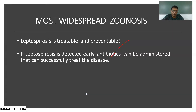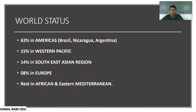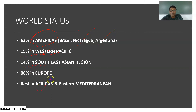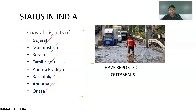Leptospirosis is a treatable disease. Whenever a case is identified and treated with the correct antibiotic, the disease can be cured. Regarding world status, 63% of cases are seen in the Americas — mainly Brazil, Nicaragua, and Argentina. 15% of cases are in the western Pacific, 14% in the south-east Asian region, 0.8% in Europe, and the rest in Africa and the eastern Mediterranean.